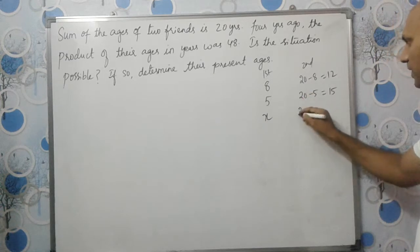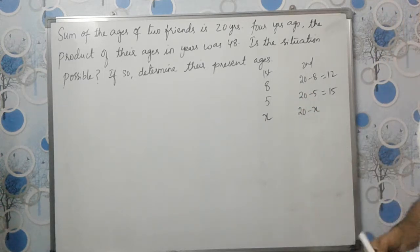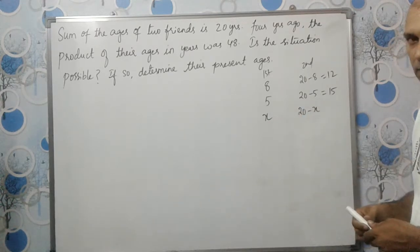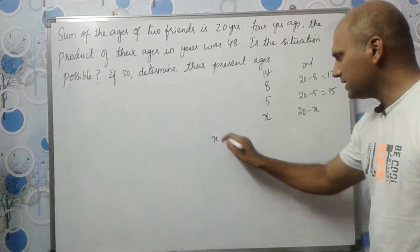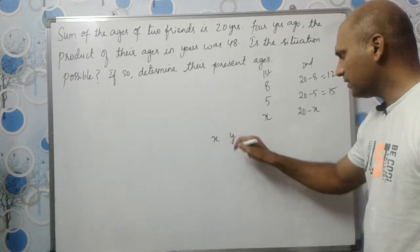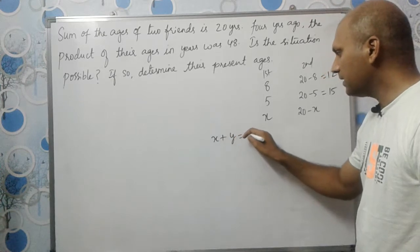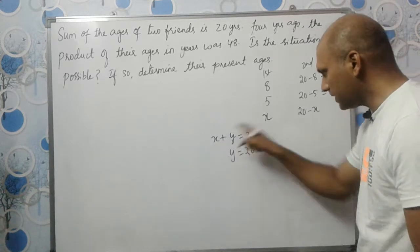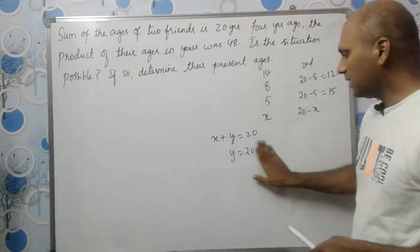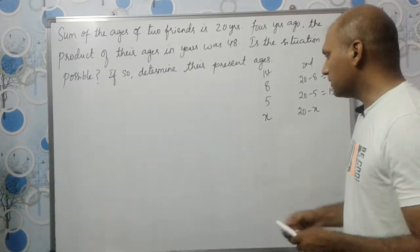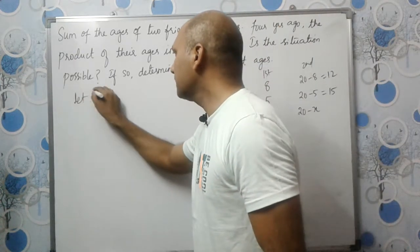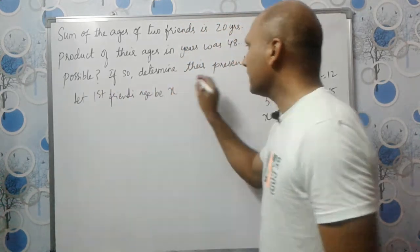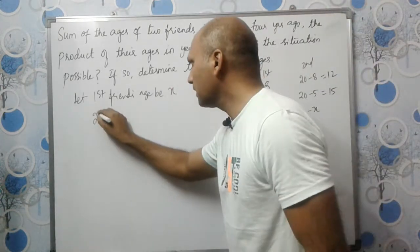So if we take the first friend's age as X, the second friend's age will be 20 minus X. We can also write the first friend's age as X and the second friend's age as Y, with X plus Y equal to 20, so Y equals 20 minus X. Let the first friend's age be X years; the second friend's age will be 20 minus X.